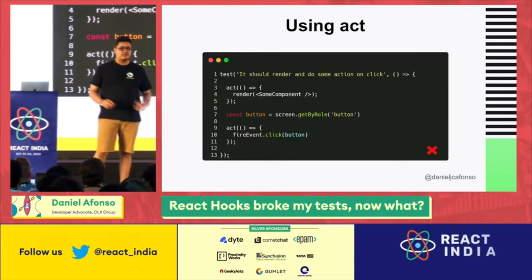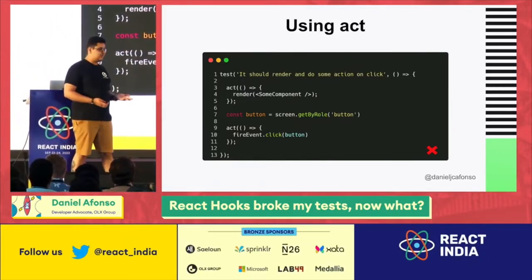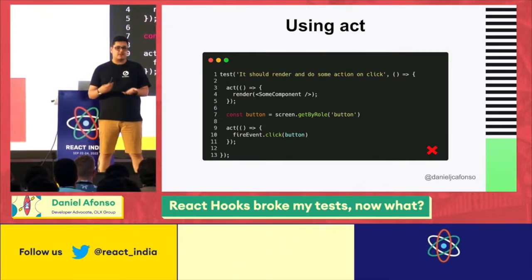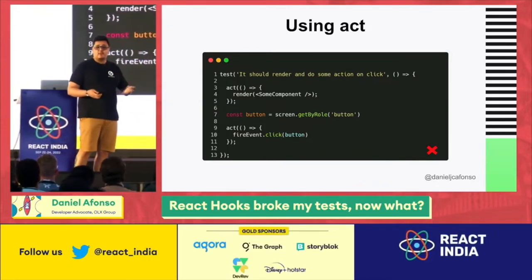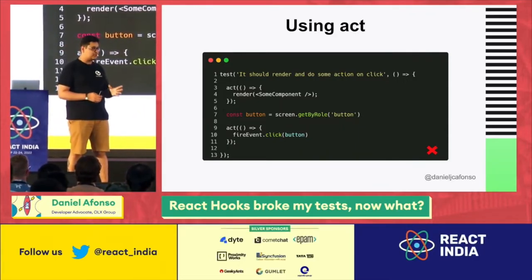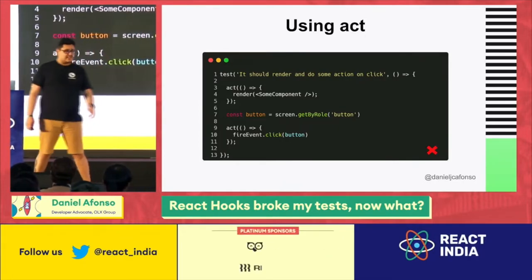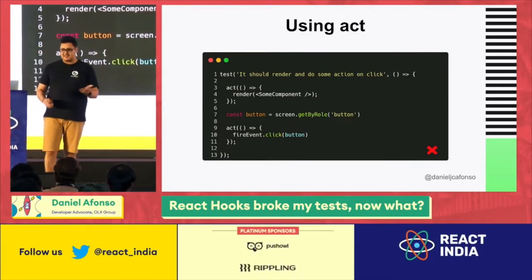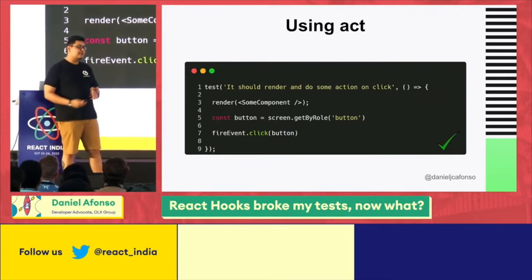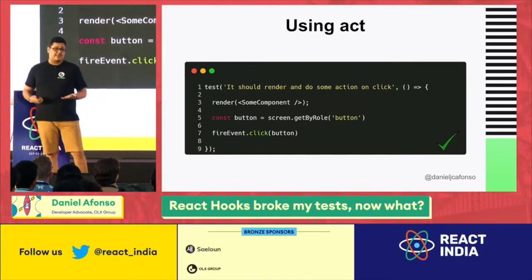The first mistake is using act. When performing interactions with the user interface, there are units of interaction — things like rendering a component, firing an event, or clicking something. Act is a React tool that makes sure all your actions are flushed to the DOM before you proceed. It might seem sensible to wrap render or firing events with act — but we don't need it, because the React Testing Library automatically wraps everything that's a unit of interaction with the UI in act by itself.